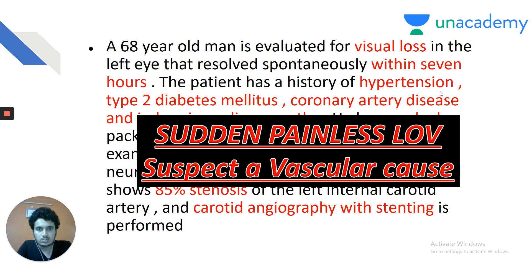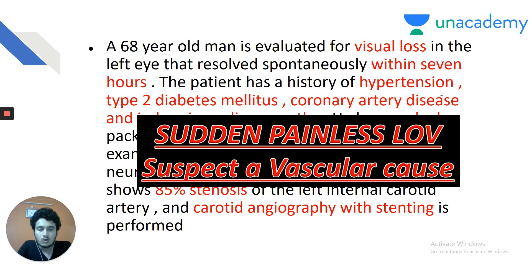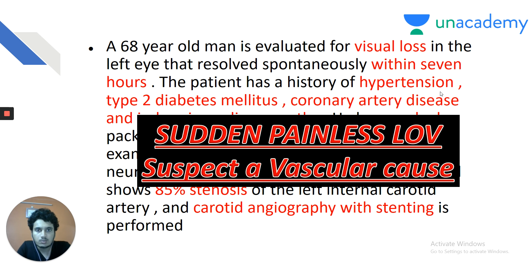In children, gradual painless loss of vision is caused by refractive errors. We must integrate medicine and ophthalmology. Whenever you read a topic, read it from all your sources across all 19 subjects. Causes of sudden painful loss of vision include acute congestive glaucoma and trauma. The most common cause of sudden painless loss of vision is central retinal artery occlusion, which causes a cherry red spot in the retina — also seen in commotio retinae from blunt trauma.